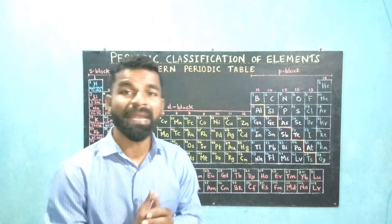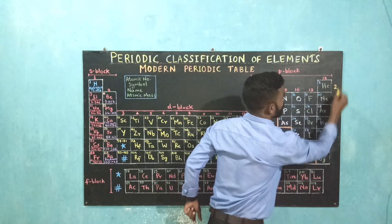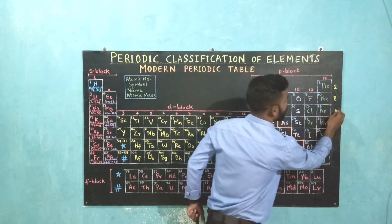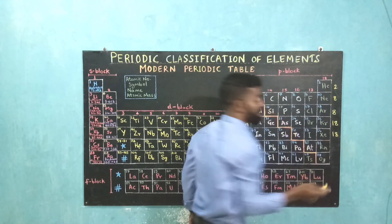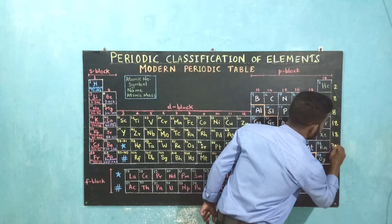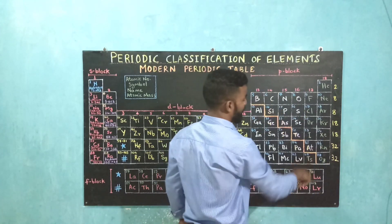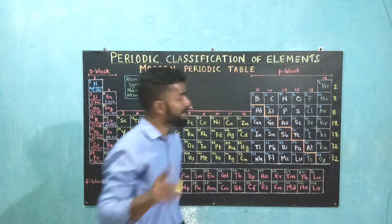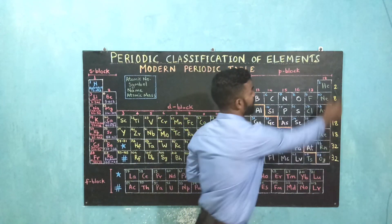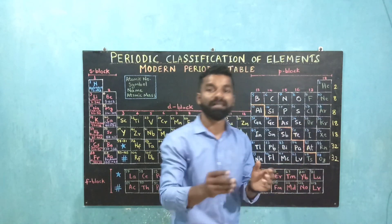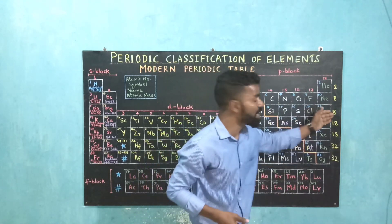For example, if we take helium — the first element of group 18 — with atomic number 2, and add 8, we get neon. Add 8 to neon, we get argon. Then add 18 to argon, we get krypton. Add 18 to krypton, we get xenon with atomic number 54. Add 32 to xenon, we get radon with atomic number 86. And then add 32 to get the last element of group 18 — oganesson — with atomic number 118. All these are noble gases and they resemble each other in properties. That is why these numbers are called magic numbers.